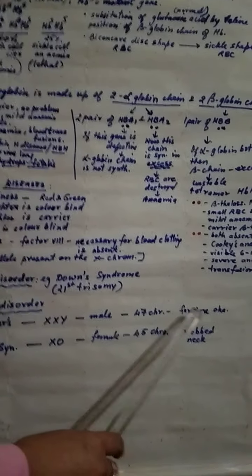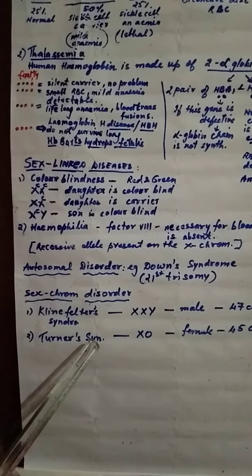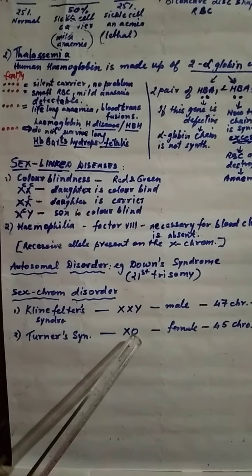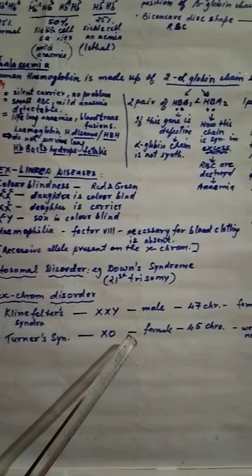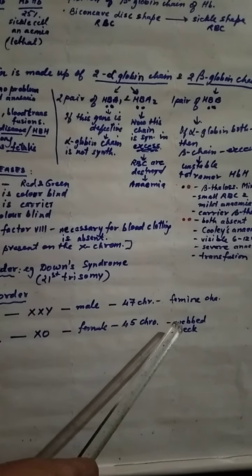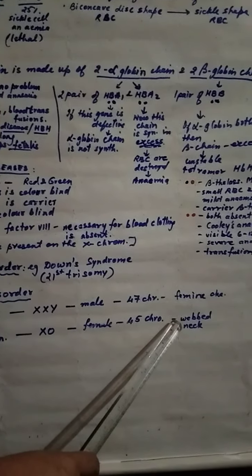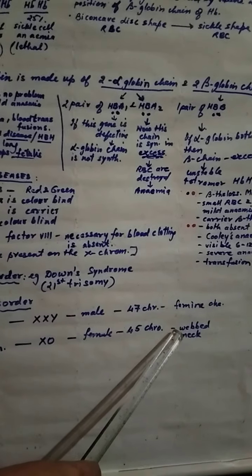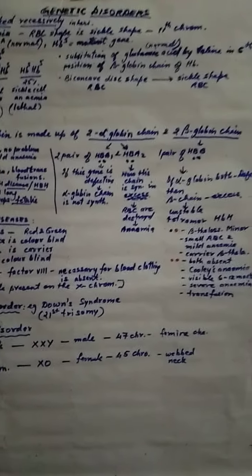Next is Turner syndrome. In this one X is absent in the female in the sex chromosome. So what is the total number of chromosome? One is less, so it will be 45 chromosomes. Here also you have to write 5 to 6 characters. Like the pinpoint is they have webbed neck, sterile reproductive organs, mentally retarded etc.